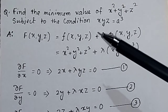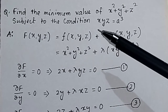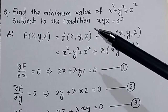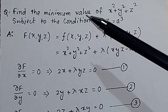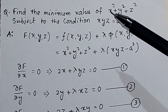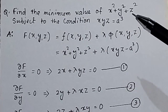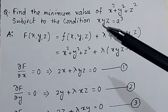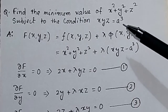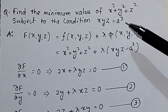This is a problem on constraint maximization using Lagrangian multiplier. Find the minimum value of x² + y² + z² subject to the condition xyz = a³.